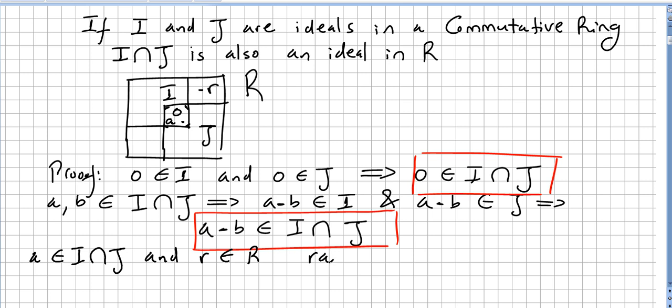So RA will be an element of I and RA will also be an element of J. So RA is in the intersection.